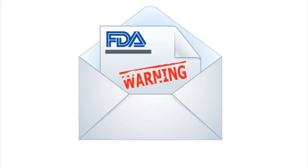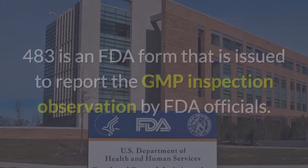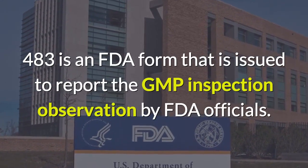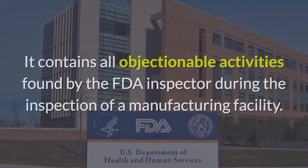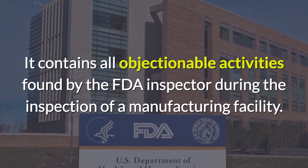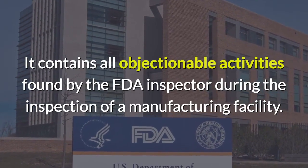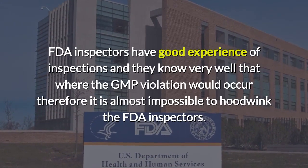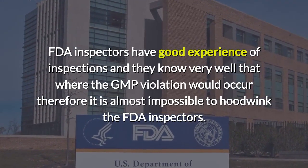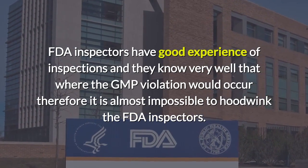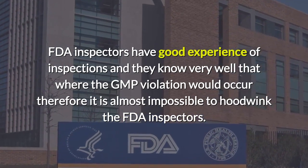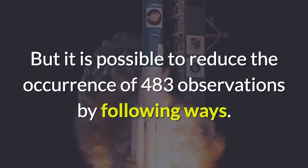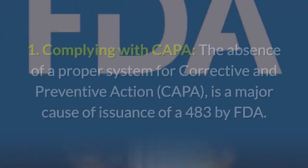Tips to reduce 483 observations. FDA Form 483 is issued to report GMP inspection observations by FDA officials. It contains all objectionable activities found by the FDA inspector during the inspection of a manufacturing facility. FDA inspectors have good experience and know very well where GMP violations would occur, so it is almost impossible to hoodwink them. However, it is possible to reduce the occurrence of 483 observations by following these ways.